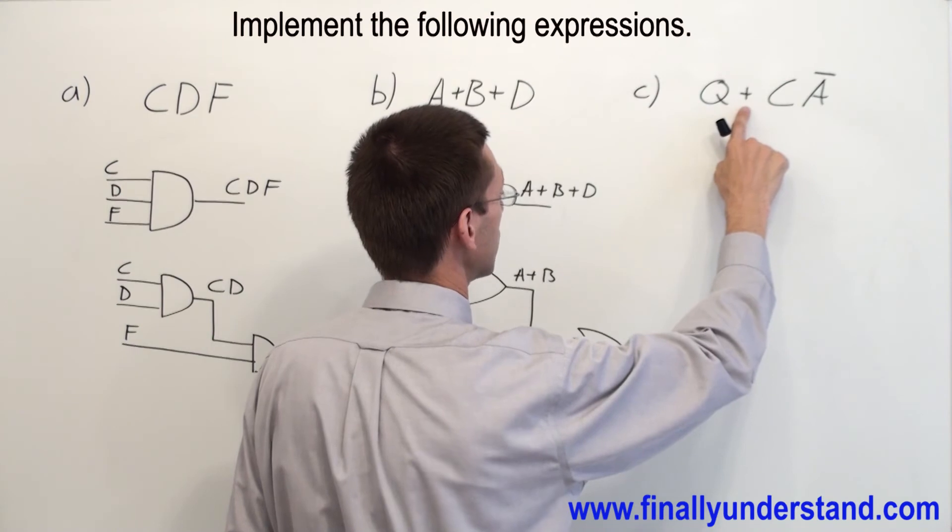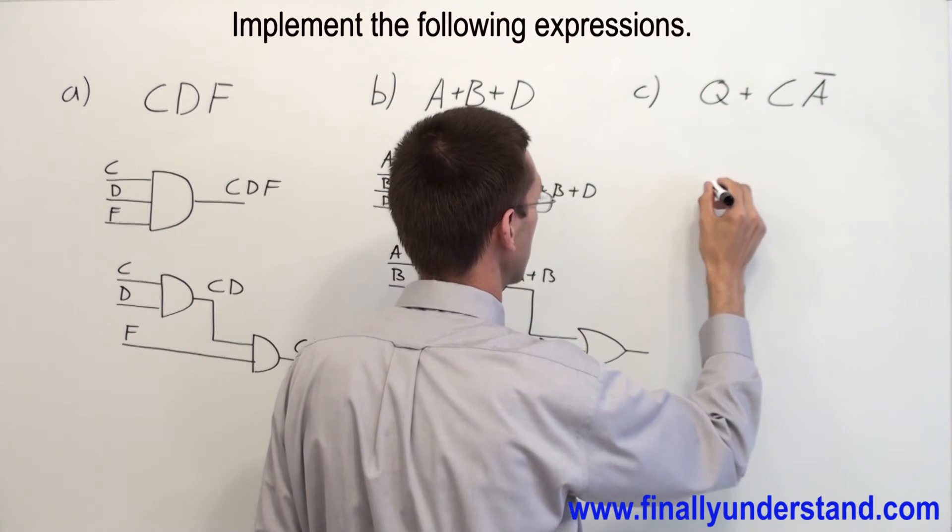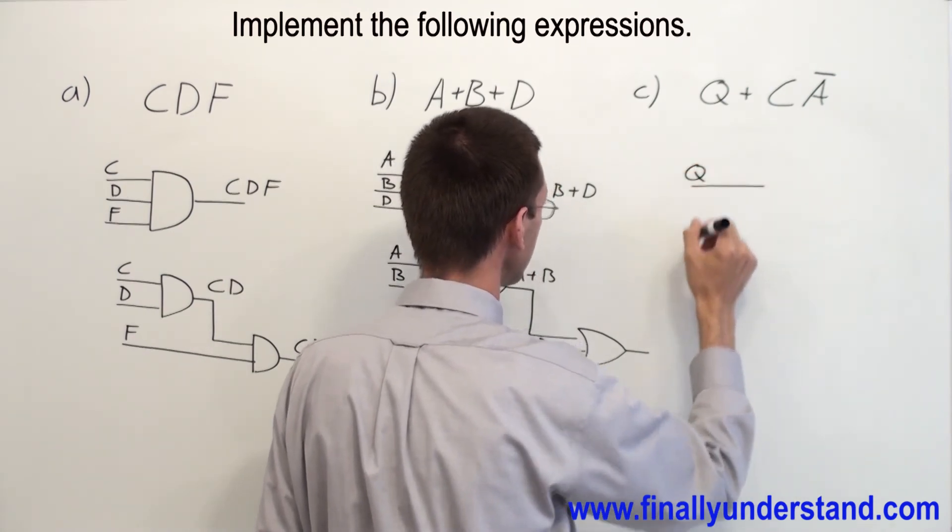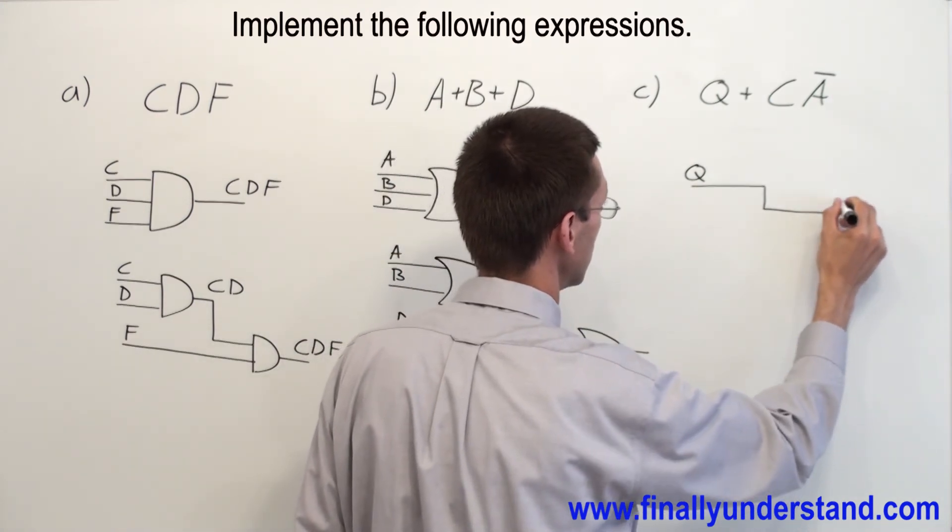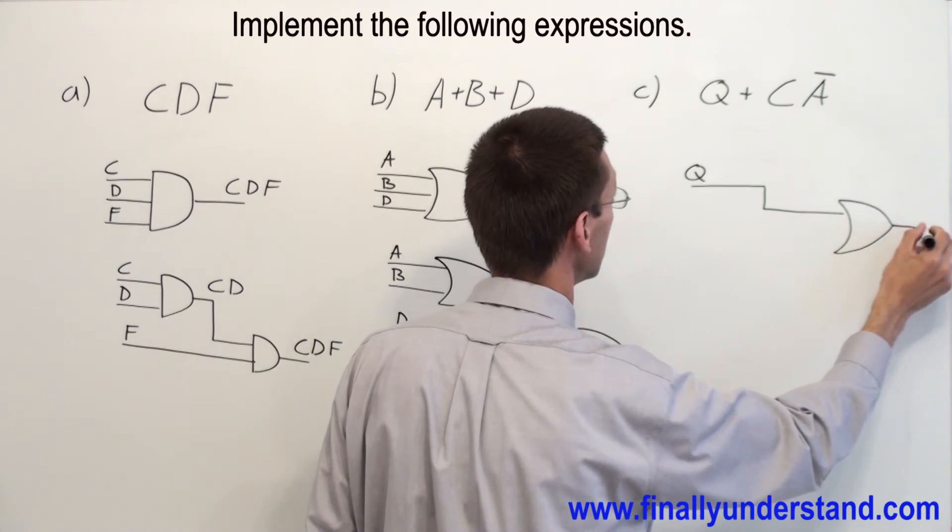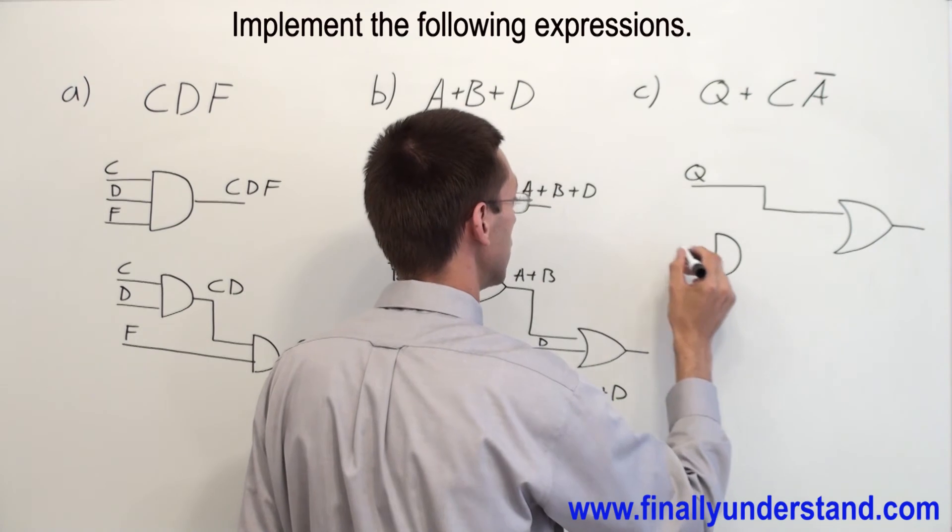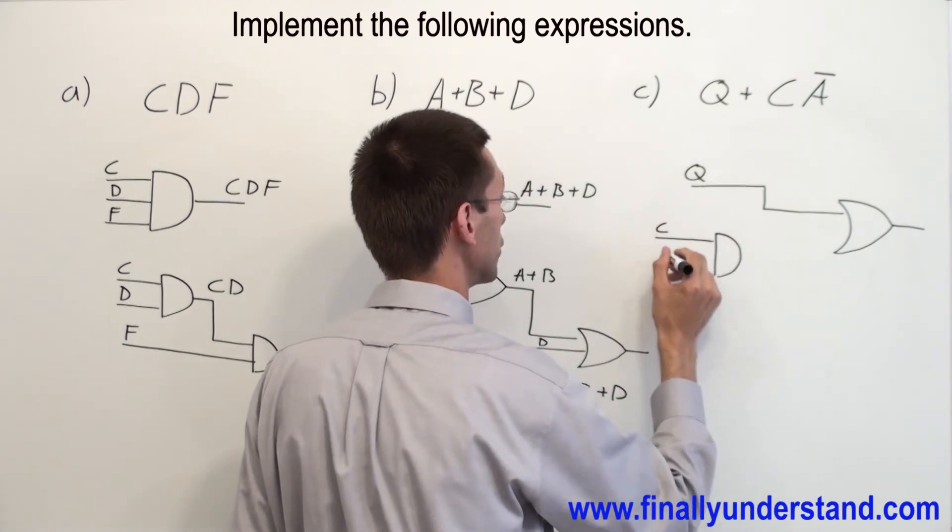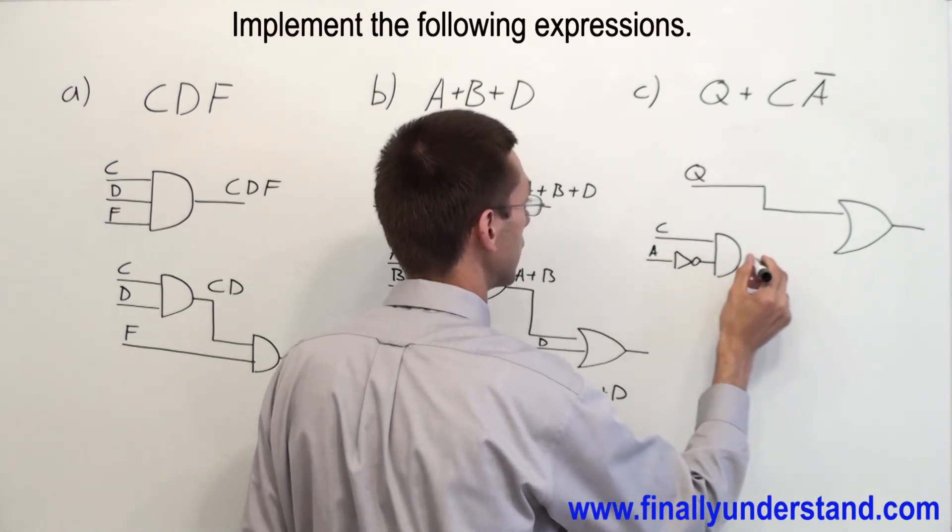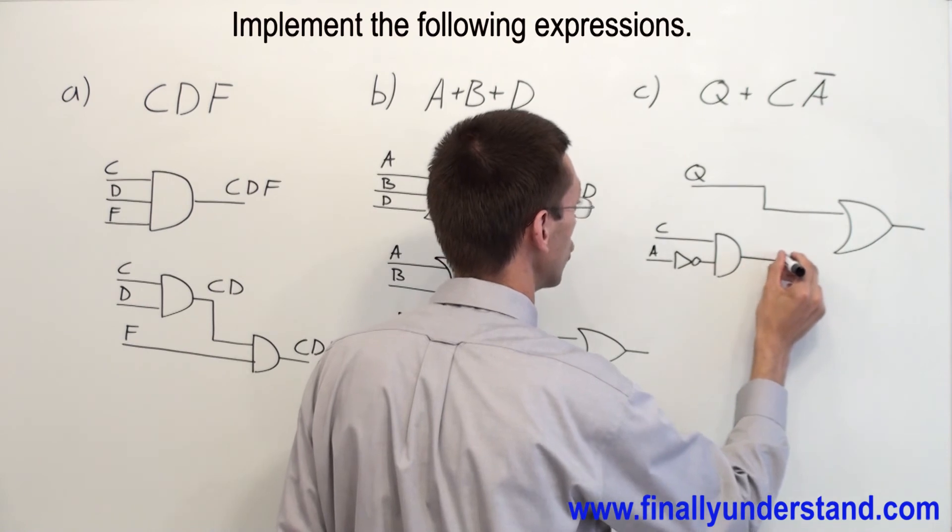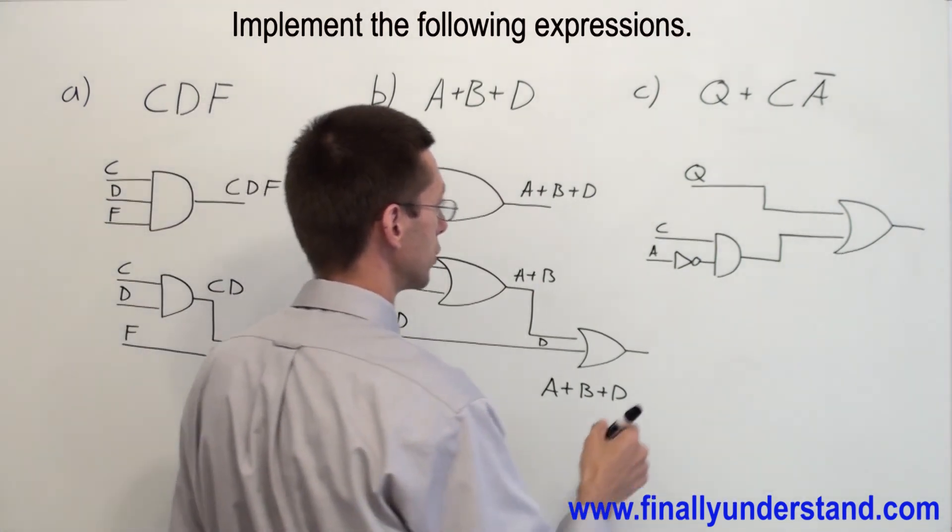I have an OR gate. I have an AND gate. And I have an inverter. So I am going to have Q. This is going to be my Q input, and it is going to go to the OR gate. And I have an AND gate. And I have input C. Input A is connected to the inverter, and the output is connected to the OR. Let's find the output function of this circuit.